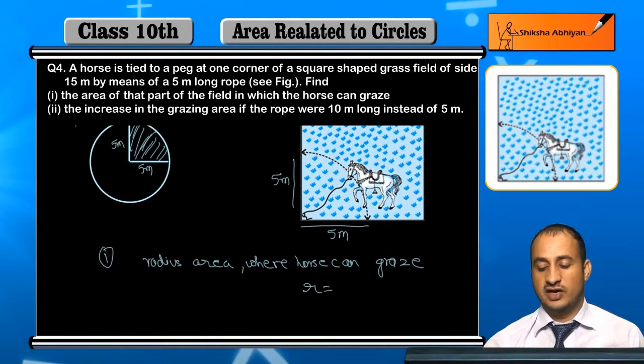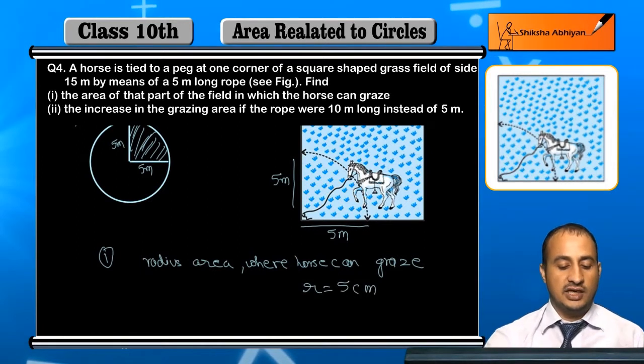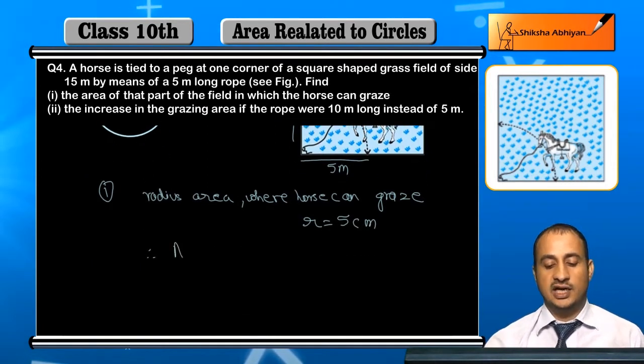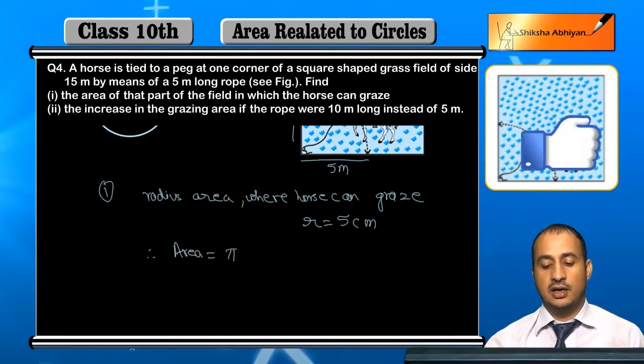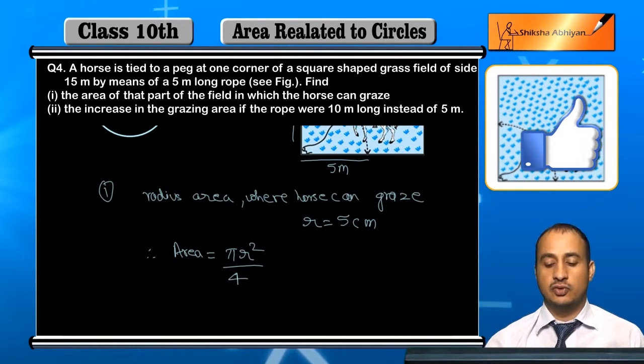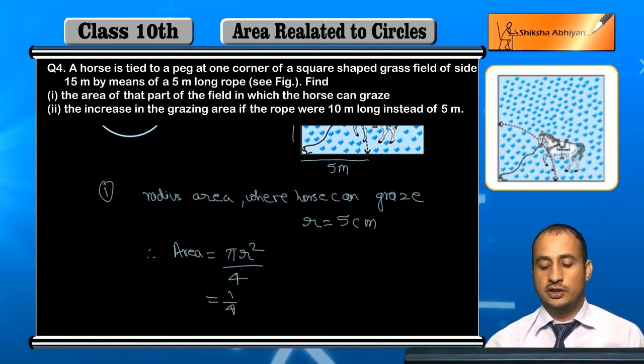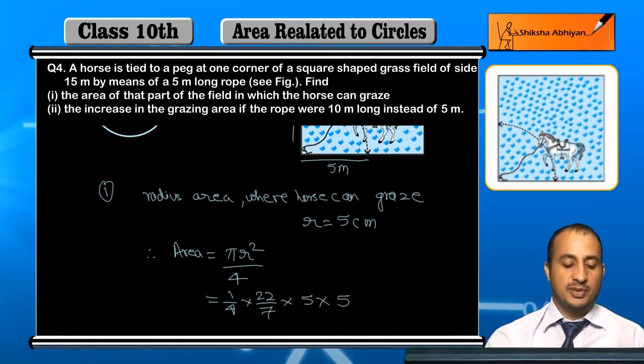I will take r equal to 5 meters. The area where the horse can graze will be the area of a quarter circle. Area equals π r squared divided by 4. That is 1/4 into 22/7 into 5 into 5.